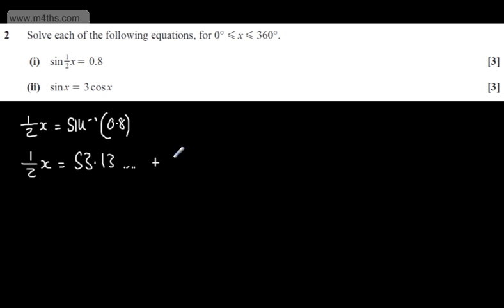plus multiples of 360 degrees. By symmetry, we will also have 1/2 x = 180 - 53.13... plus multiples of 360.